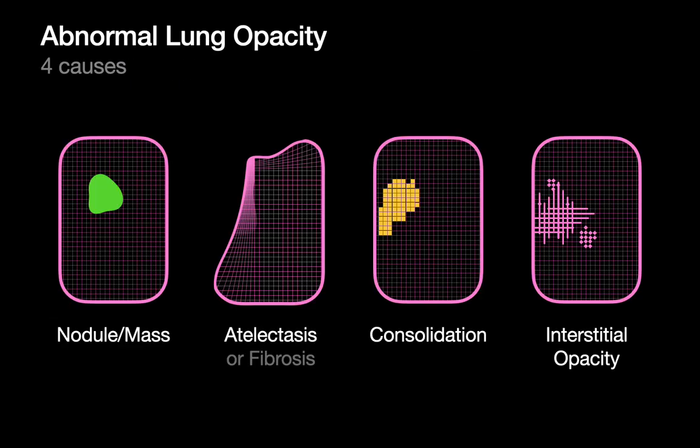In our introductory talk, we had discussed how there are four main reasons why lung may look abnormally opaque on imaging: a nodule or mass, phenomenon of atelectasis or fibrosis, consolidation, and an interstitial opacity.